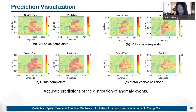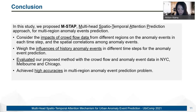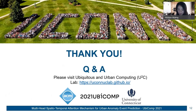In conclusion, in this study we propose AMSA for multi-region anomaly events prediction. We consider the impacts of crowd flow data from different regions on the anomaly events in each time step and the spatial correlations among anomaly events. We also differentiate the impact of historical anomaly events of different time steps on the anomaly events prediction. We utilize the anomaly events and crowd flow data of New York City, Melbourne, and Chicago to evaluate the effectiveness of our proposed designs and achieve high accuracy in the citywide anomaly events prediction. Thank you for your attention. Please visit our website for more information.